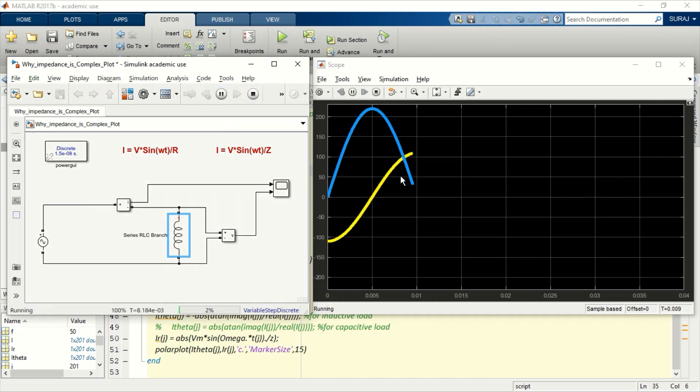You can see the results here. So basically, why the impedance was represented by the imaginary number or complex number in the first place comes from this property.